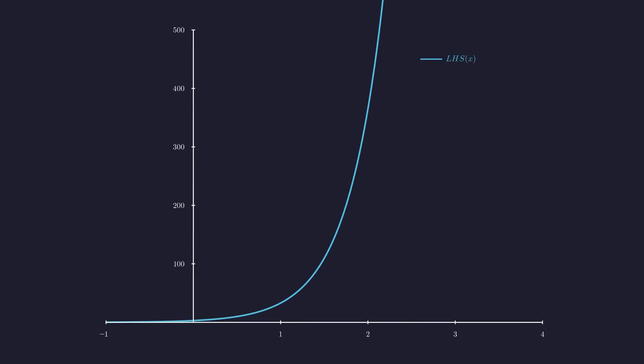First, here's the left-hand side of our equation in blue, the sum of 10 to the x, 11 to the x, and 12 to the x. Now let's add the right-hand side in green, 13 to the x plus 14 to the x. The solutions to our equation are exactly the points where these curves meet.